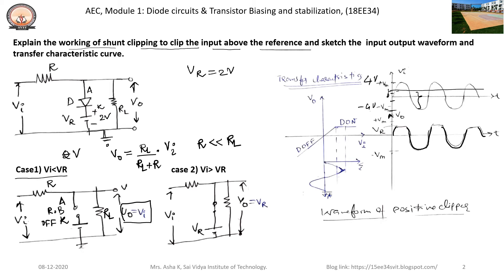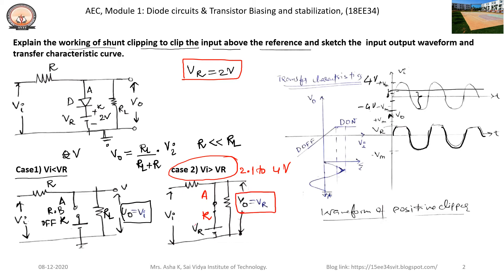Consider Case 2, when the input voltage is greater than the reference voltage of 2 volts — that is, voltages from 2.1 to 4 volts. In such cases, the anode will be at a higher potential compared to the cathode. Hence, the output voltage will be exactly equal to the reference voltage applied. For values greater than 2 volts, from 2.1 to 4 volts, the output will be exactly equal to the reference voltage of 2 volts.